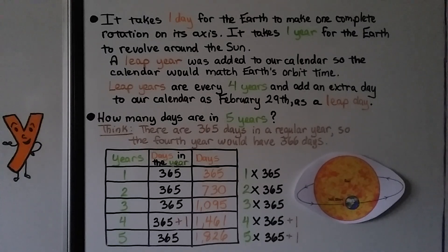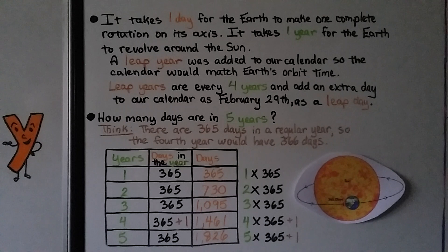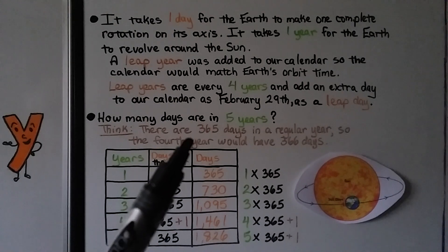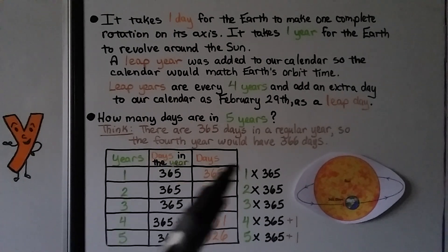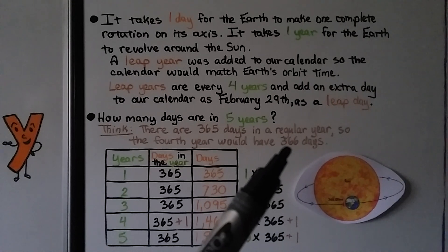It takes 1 day for the Earth to make 1 complete rotation on its axis. It takes 1 year for the Earth to revolve around the Sun. A leap year was added to our calendar, so the calendar would match Earth's orbit time. Leap years are every 4 years and add an extra day to our calendar as February 29th, as a leap day. The other years only go to February 28th. So how many days are in 5 years? So we think. There are 365 days in a regular year. The 4th year would have 366 days, that extra day. One more.